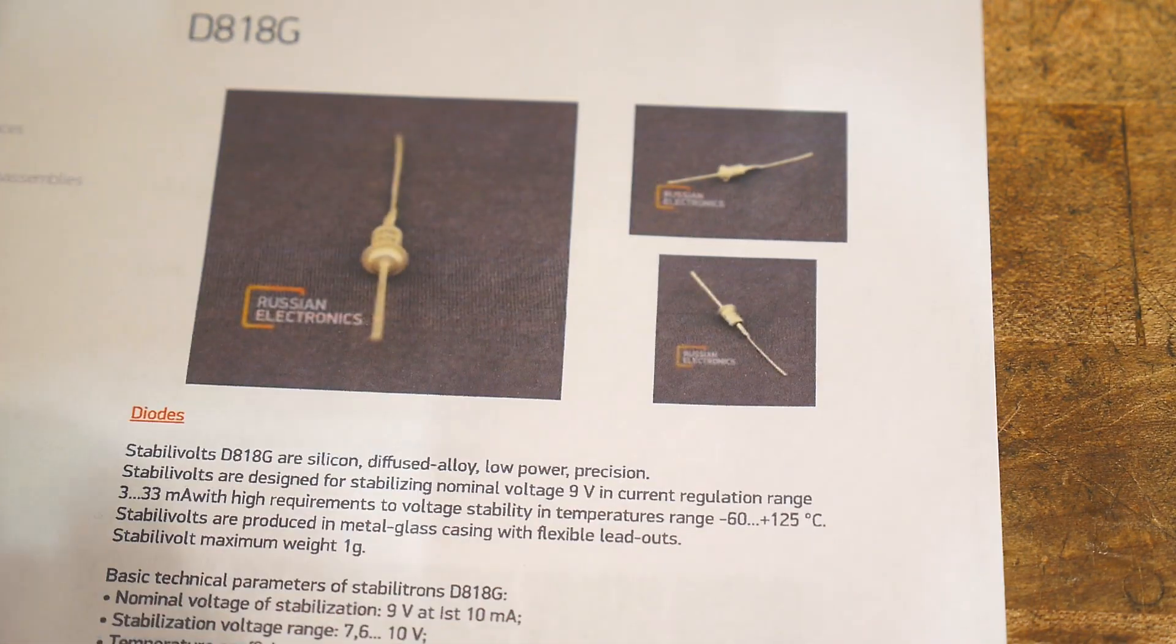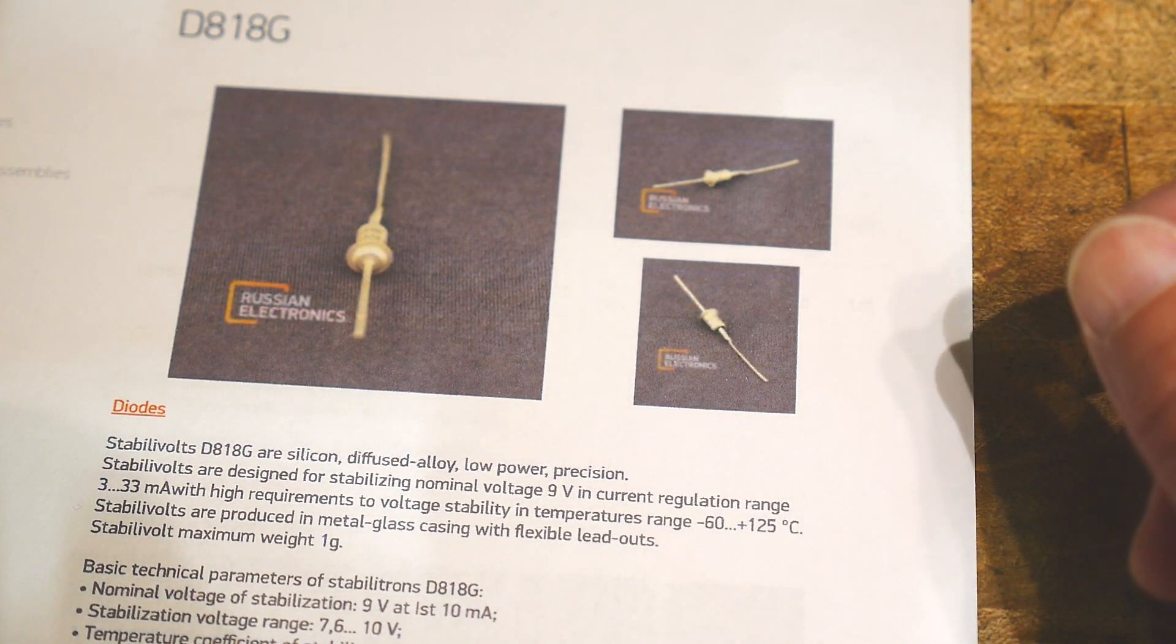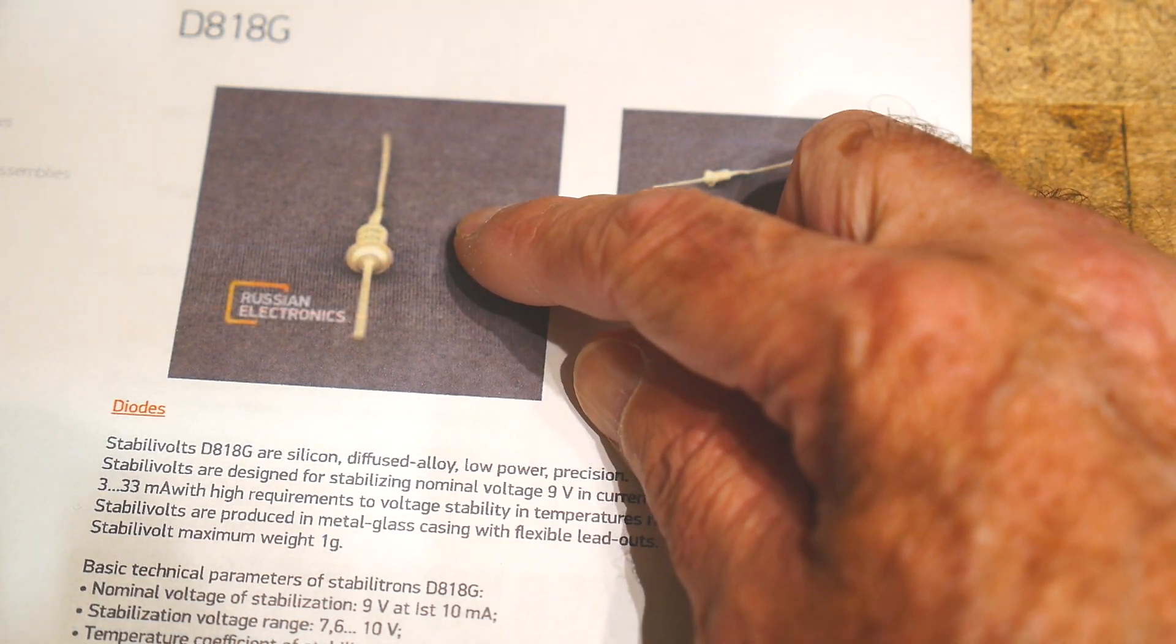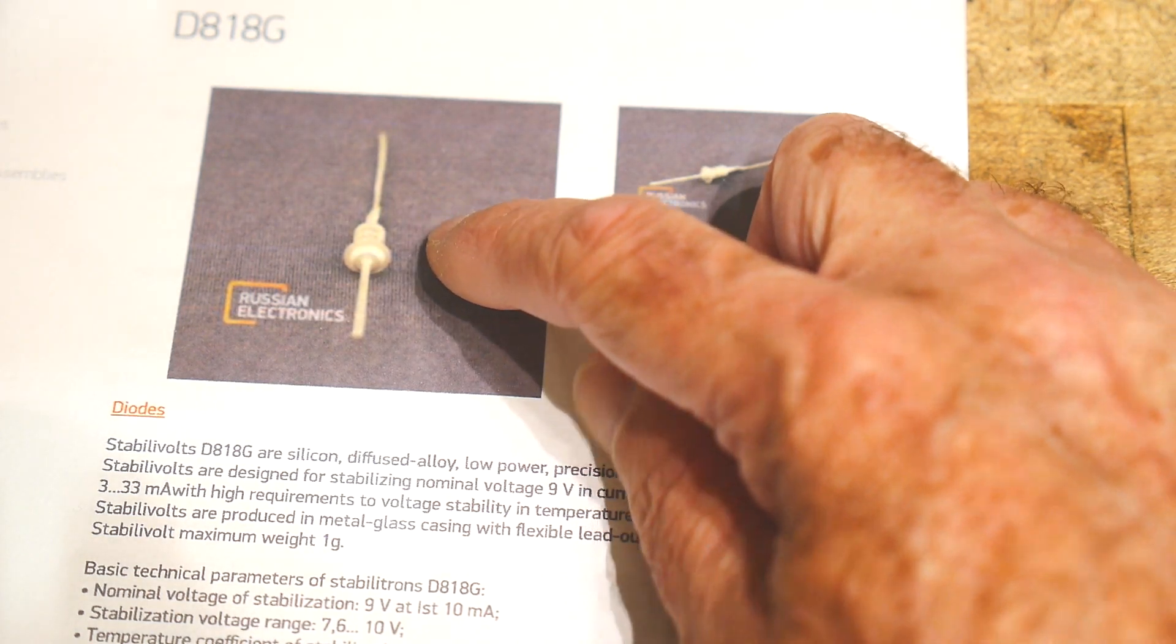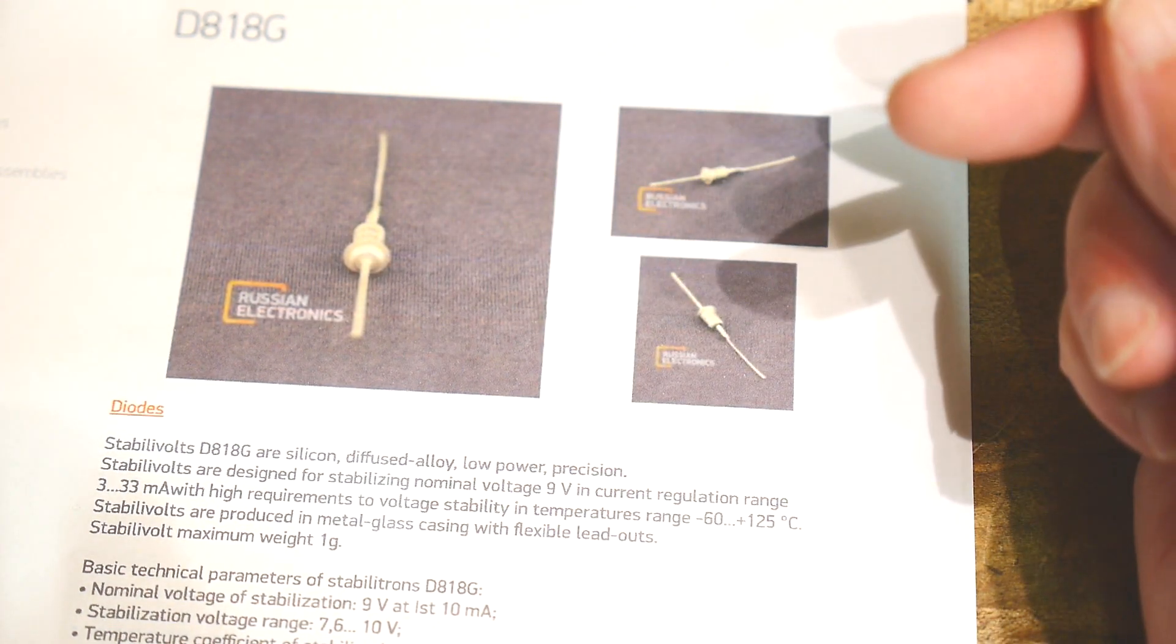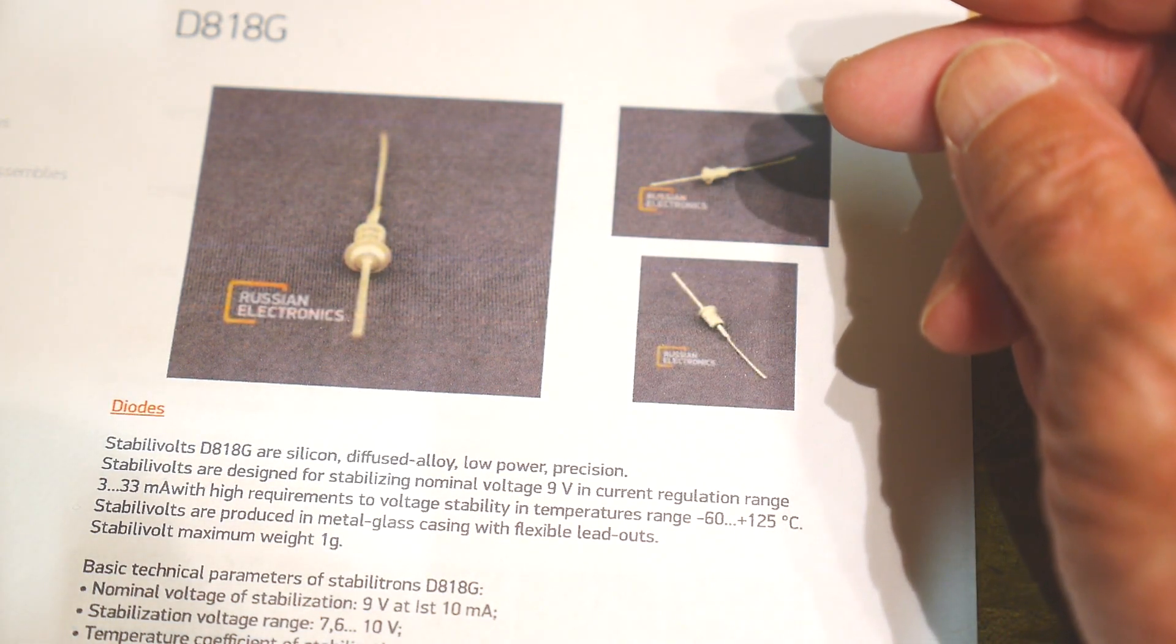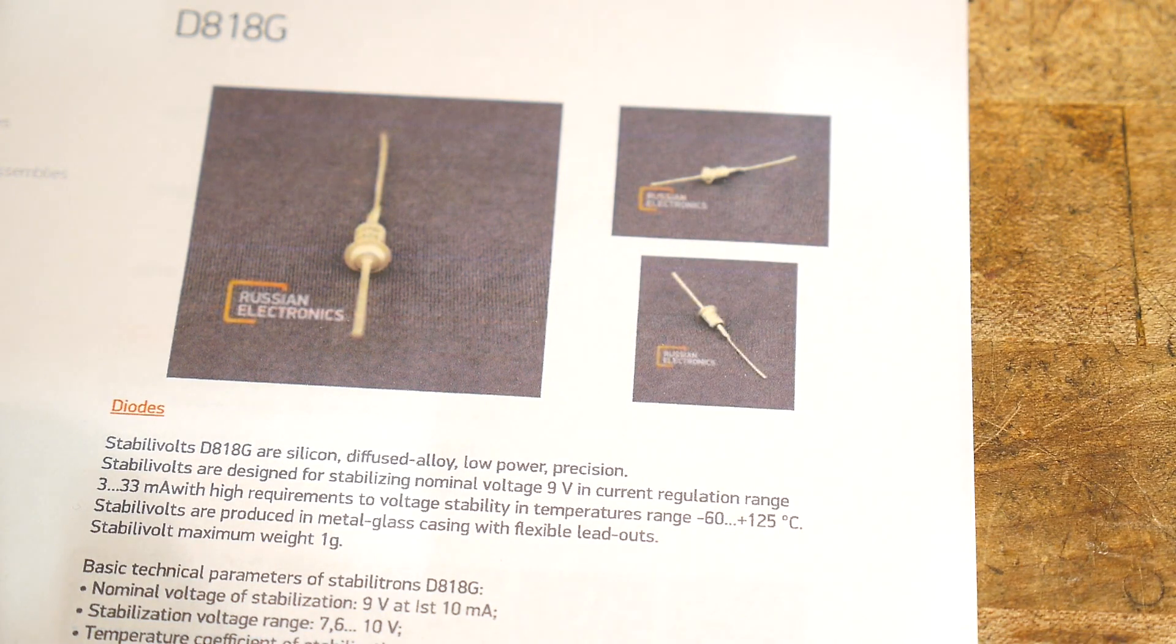I thought I would take a look at this. What I really need is something to generate 4V. If I can generate a stable 9V and then divide it down to 4V, this would do the job. I want to make a microphone preamp and I need a stable voltage so it doesn't introduce noise into the audio.